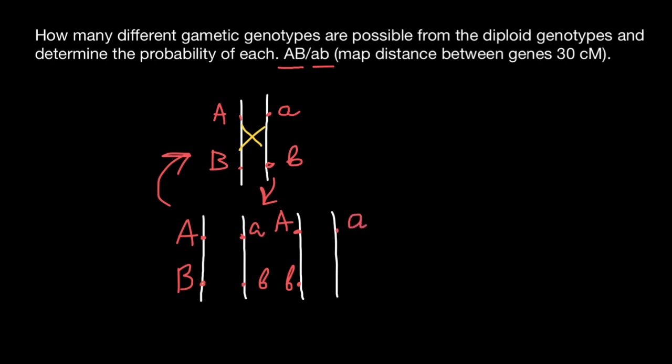According to our problem, we know that distance between gene A and B, 30 centimorgans. And that means that in the gametes, we will find recombinant product, which would account for 30%. So these two variants would make 30%. And another 70% would be non-recombinant.